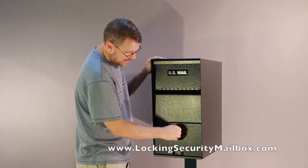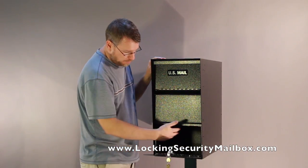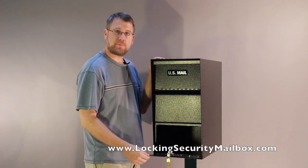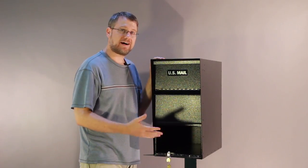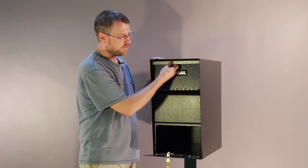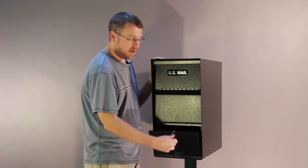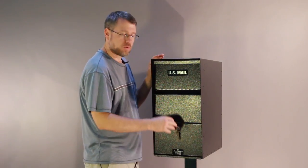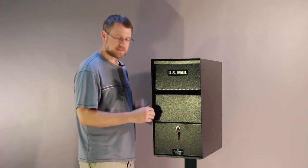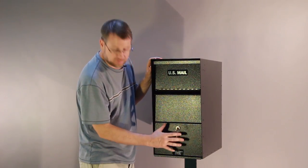This unit has an opening you can see here to retrieve your mail out. Your postal carrier does not need a key. They simply open the door, drop the mail in, and you retrieve it out. There is an option to have a rear retrieval, so this would just be flat, still covered, and this door would be on the rear.